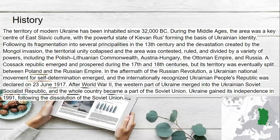History has a lot to cover. The territory of modern Ukraine has been inhabited since 32,000 BC. During the Middle Ages, the area was a key center of East Slavic culture, with the powerful state of Kievan Rus forming the basis of Ukrainian identity. Following its fragmentation into several principalities in the 13th century and the devastation of the Mongol invasions, territorial unity collapsed. The area was then contested, ruled, and divided by a variety of powers including the Polish-Lithuanian Commonwealth, Austria-Hungary, the Ottoman Empire, and Russia.